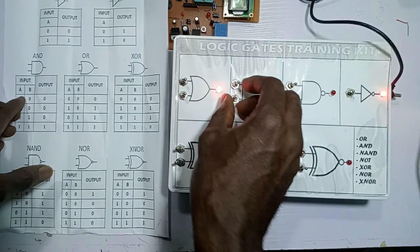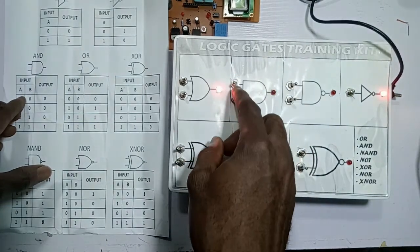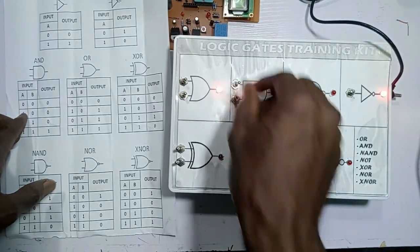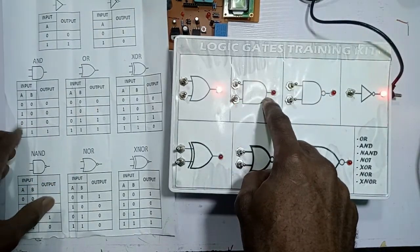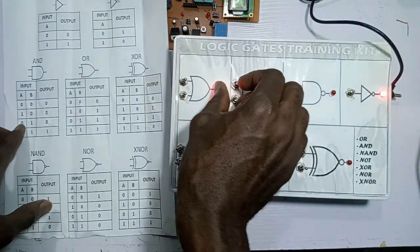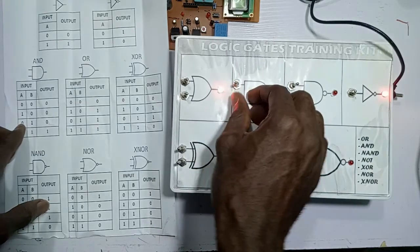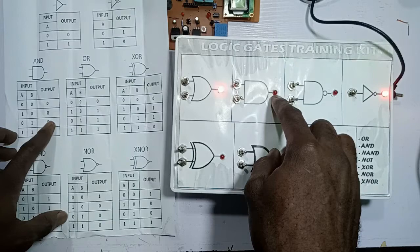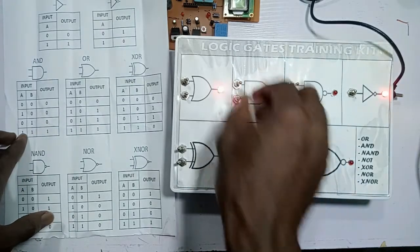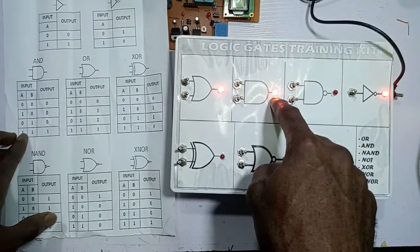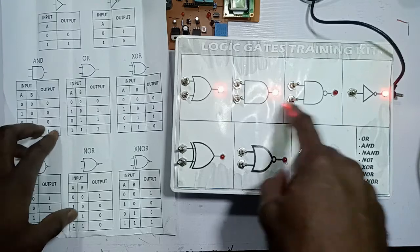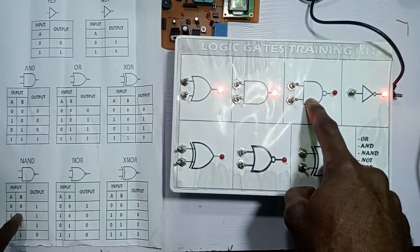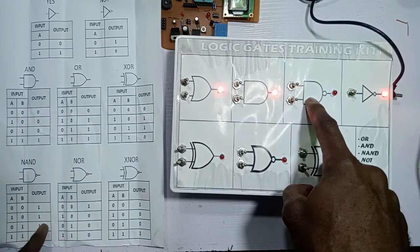For the AND gate: zero zero gives zero, one zero gives zero, zero one gives zero, so the output is still zero. If I have one one, the output is one.